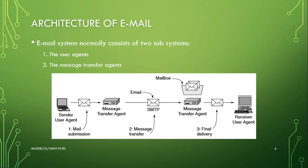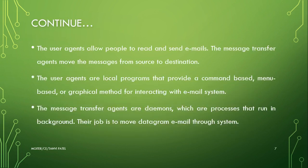Next is the architecture of email. An email system normally consists of two subsystems: the user agent and the message transfer agent. As seen in the figure, the user agent allows people to read and send emails to each other, while the message transfer agent moves the message from source to destination.